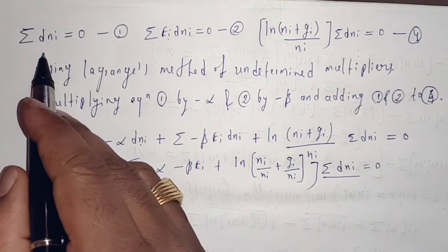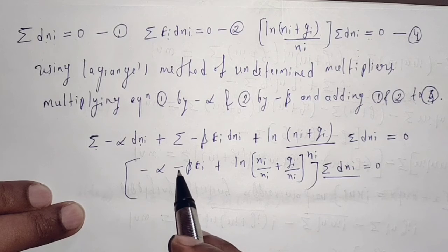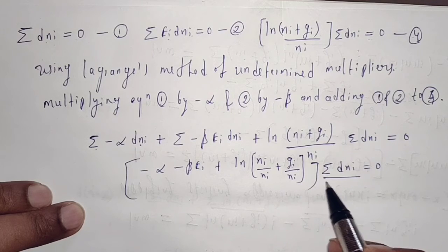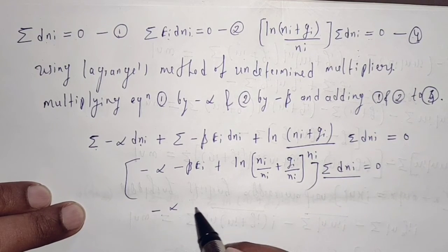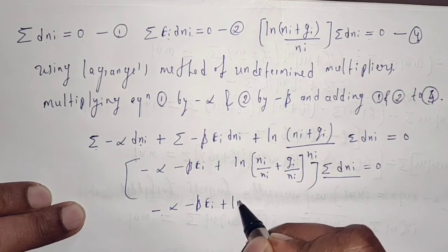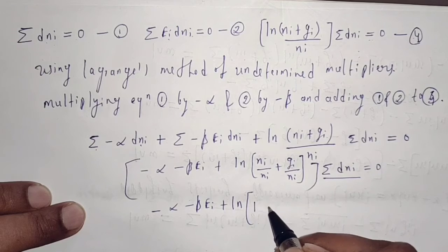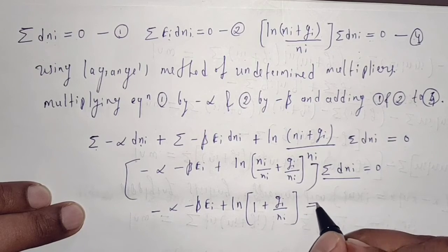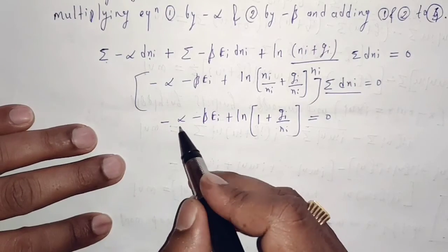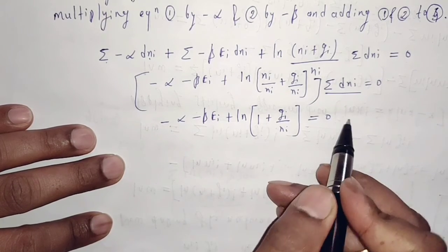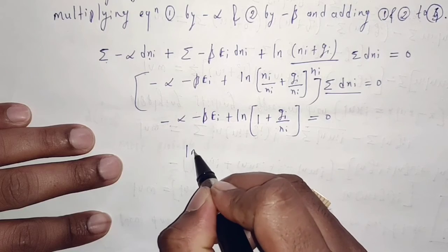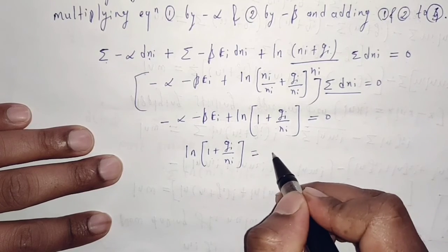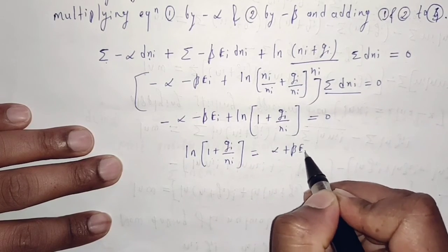Since summation d(ni) = 0, the next possible solution is: minus alpha minus beta·ei + ln[(ni + gi)/ni] = 0. Rearranging, ln[1 + gi/ni] = alpha + beta·ei.